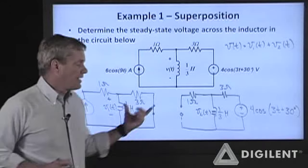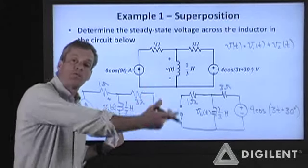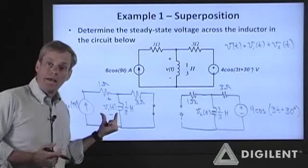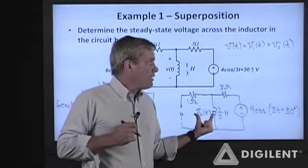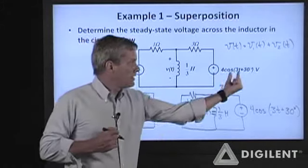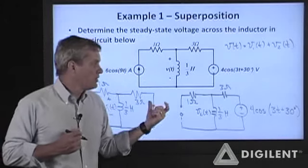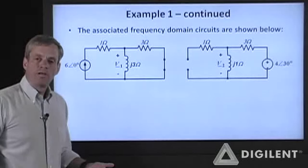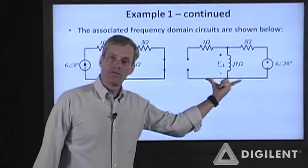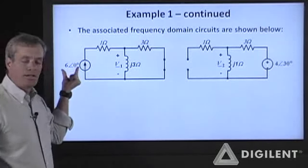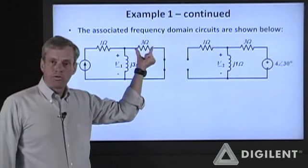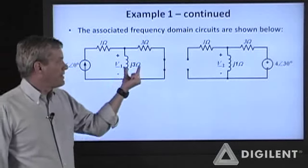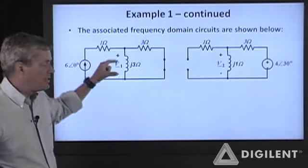What I want to do is analyze these in the frequency domain. I'll take each circuit, transfer it to the frequency domain, create a phasor version, replace resistances with impedances, and find V1 and V2 as phasors. When I convert to the frequency domain: for the current source circuit, the phasor is 6∠0° amperes. The inductor's impedance is jωL; at ω = 9 rad/s, that becomes j3Ω. For the voltage source circuit, the phasor is 4∠30° volts; at ω = 3 rad/s the inductor impedance is j1Ω. Resistors do not change — they are not a function of frequency.